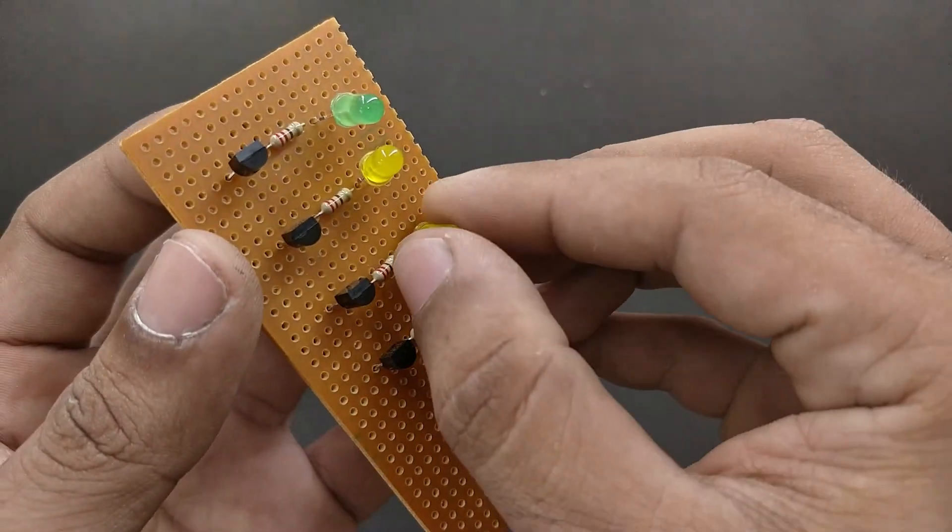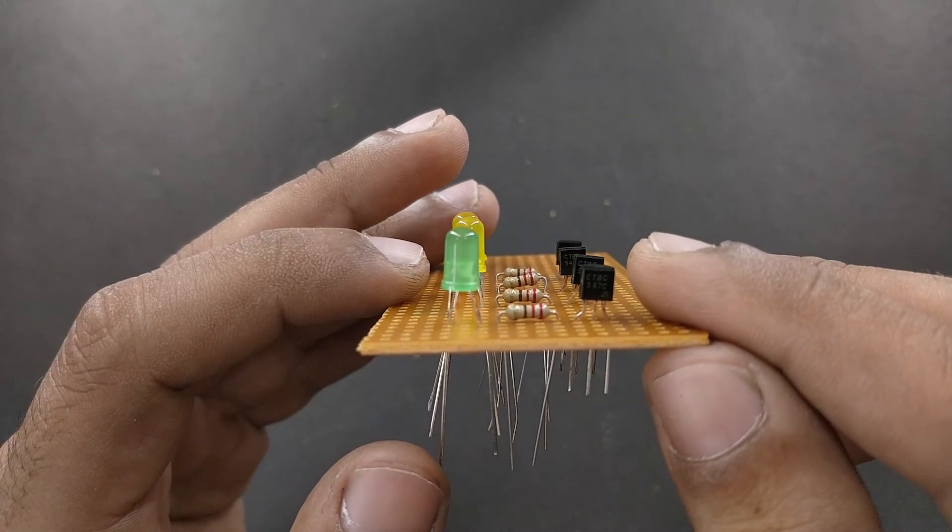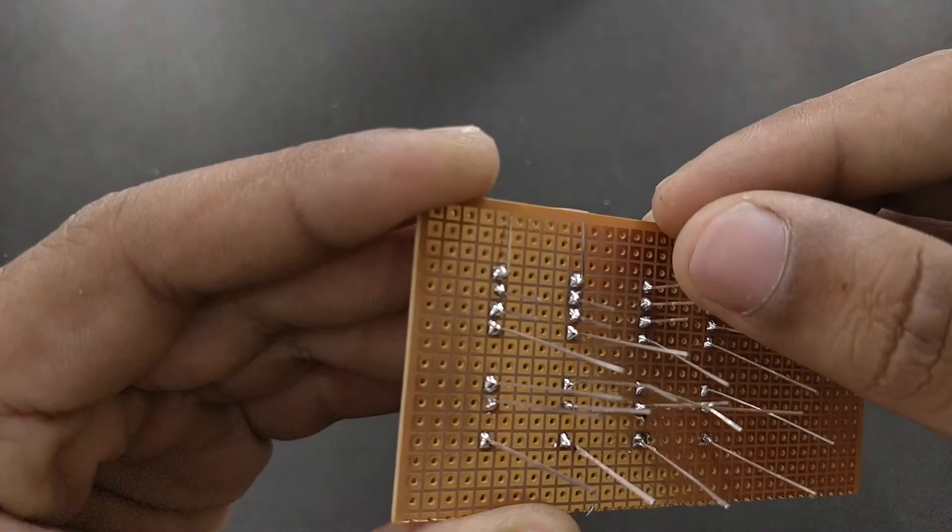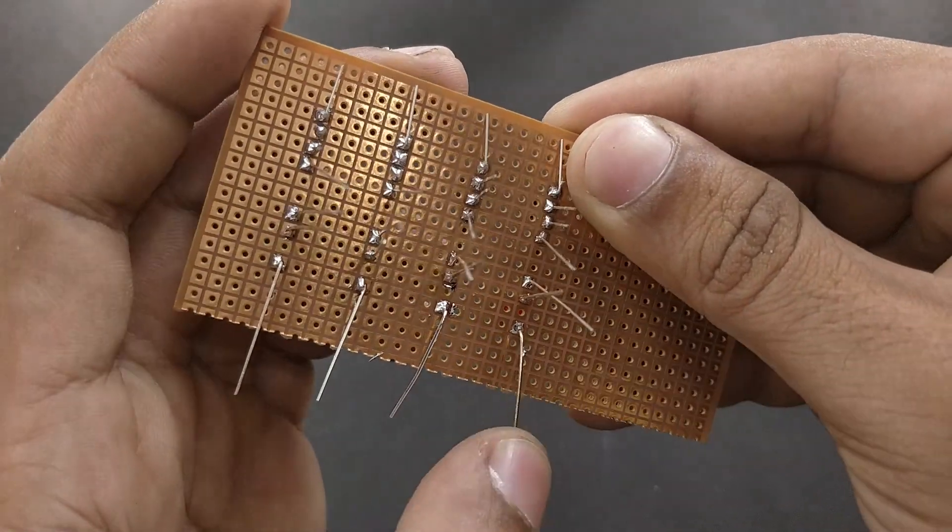Also try to use LEDs of different colors to mark different levels like you see in the video - that would be more appealing. Once all the components are fixed, connect them together like you see in the video. You can also find the circuit diagram of the same in the description of this video.